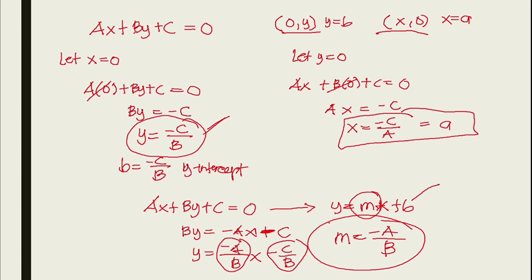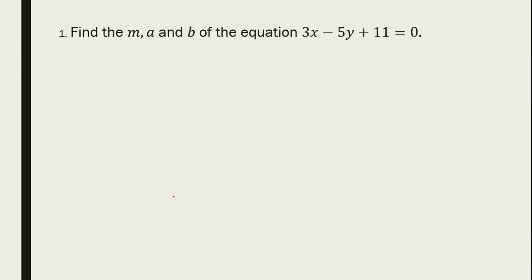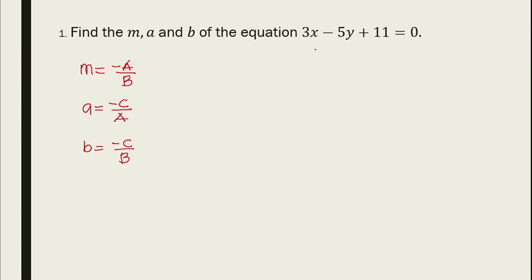So we have now derived the y-intercept, x-intercept, and slope formulas. Let's apply them. Find the slope, x-intercept, and y-intercept of the equation 3x - 5y + 11 = 0. From this equation, we identify the coefficients: a = 3, b = -5, and c = 11. Make sure the equation is already in general form before using these shortcut formulas.